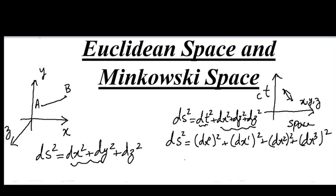Or in the tensor notation, we can write this as ds² = g_μν dx^μ dx^ν.